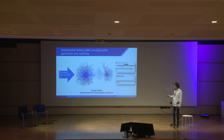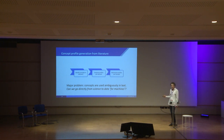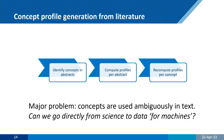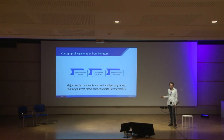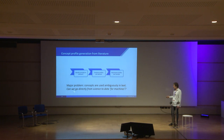A major problem — as many in text mining know — is that concepts are often ambiguous in text; humans are not very precise. That had a big effect on what we could do. So the idea was born: can we go directly from doing science and producing results to data for machines, rather than first writing it up in a publication and then using sophisticated text mining to extract it all again?